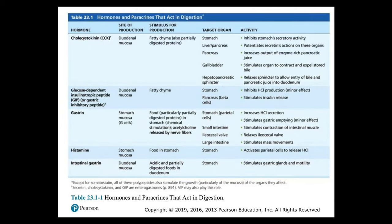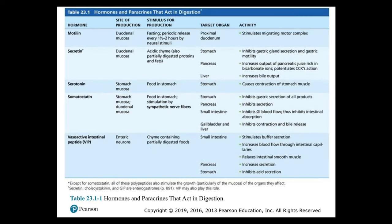Please take a look at Table 23.1 for a comprehensive summary of the hormones and paracrines involved in digestion — including CCK, gastrin, histamine, intestinal gastrin, secretin, serotonin, somatostatin, and others. In the second part of the figure, concentrate on secretin, serotonin, and somatostatin.